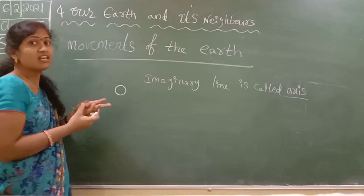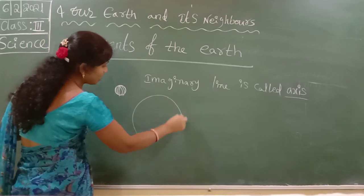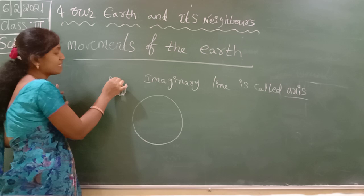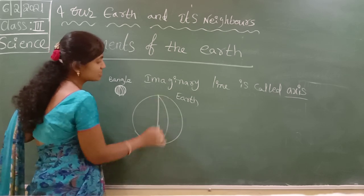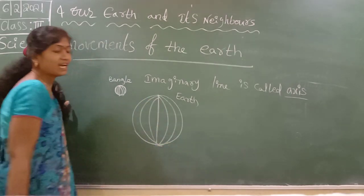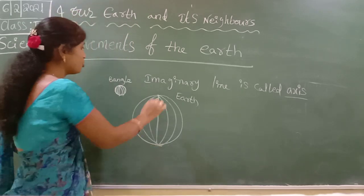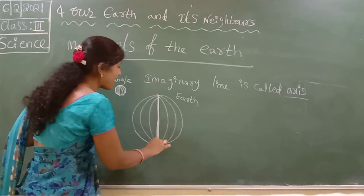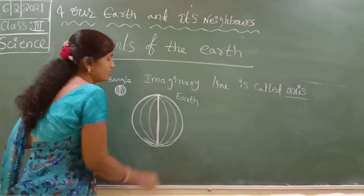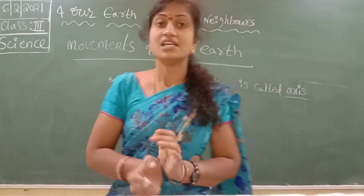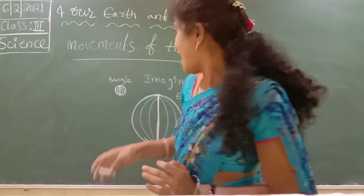When the bangle is moving very speedily, we are observing imaginary lines. Like the bangle, the Earth also has the same. For example, this is a bangle and this is the Earth. Our Earth also has the same axis. These are all imaginary lines. Our Earth is also moving like that.